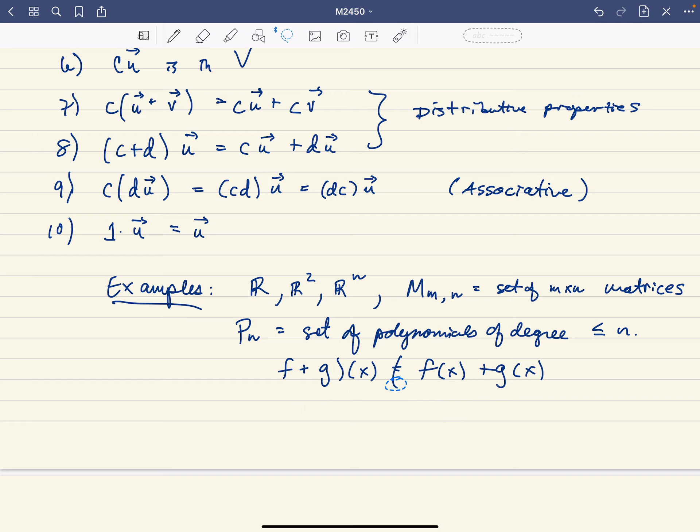So these are the two, oops, my iPad's freaking out. These are the two vector addition and scalar multiplication properties that we were looking for. So those are, again, a big example of a vector space. And these are going to be our three big examples. Rⁿ, the set of n by n matrices, and the set of polynomials of degree at most n.